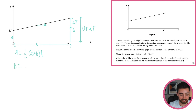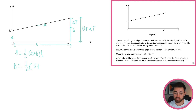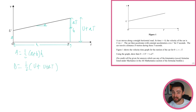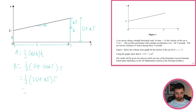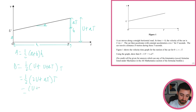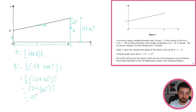So d = ½(u + u + at) × t = ½(2u + at) × t. Expanding: ½ × 2u = u, and ½ × at = ½at. Multiplying through by t: d = ut + ½at². Derived.